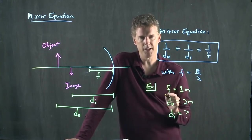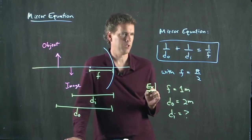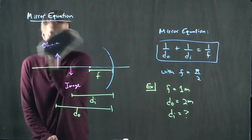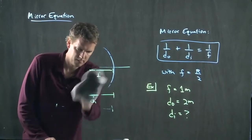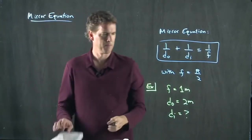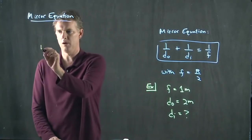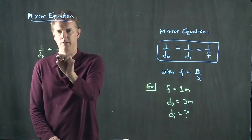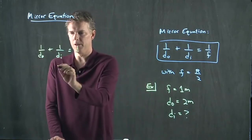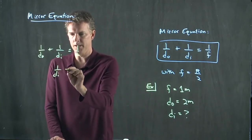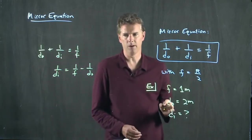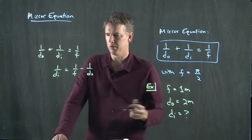Can we solve this now for DI? Well, yeah, that doesn't look too bad, right? Let's take this equation and let's solve it for DI. All right. So we've got 1 over DO plus 1 over DI equals 1 over F. So let's move the DO to the other side. I got 1 over DI equals 1 over F minus 1 over DO. And now I know all those numbers. So we can just plug them in.